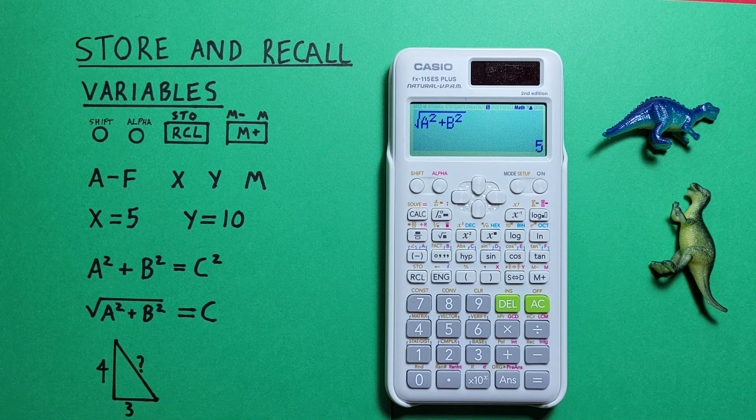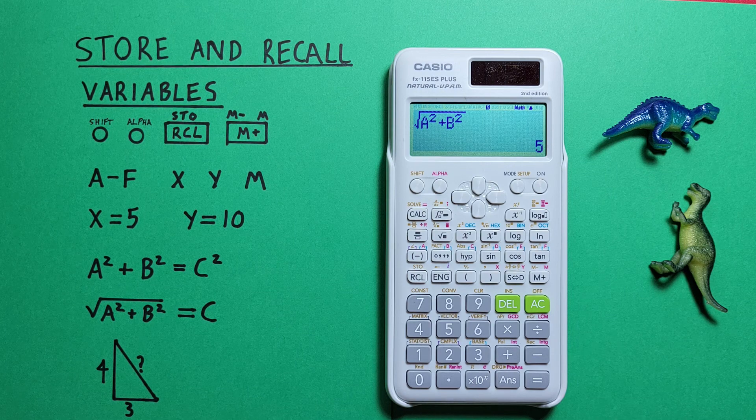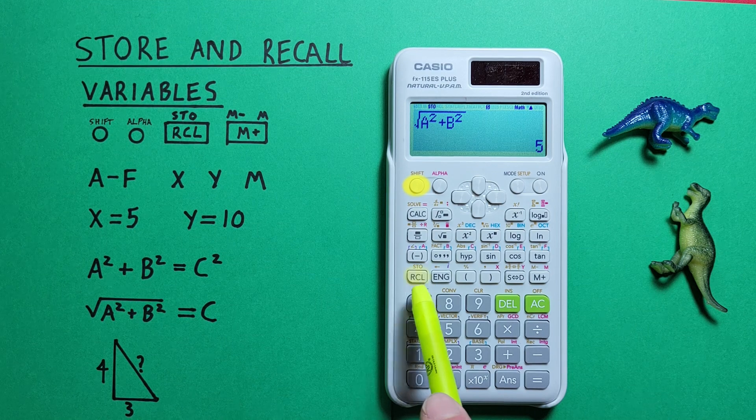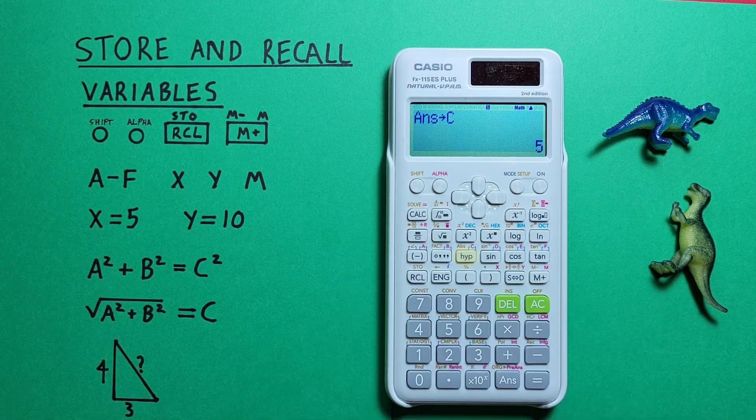And again, we can store this in our calculator as c if we need to use it later. So shift, store, c. There we go.